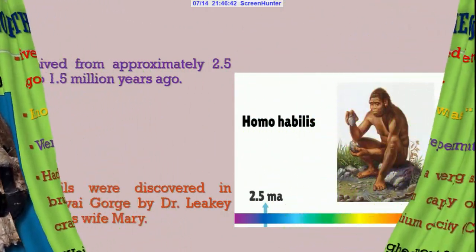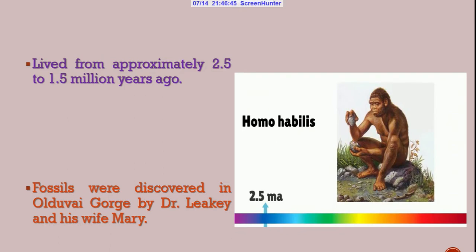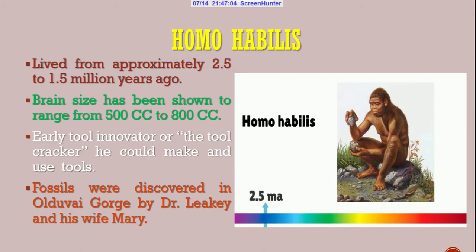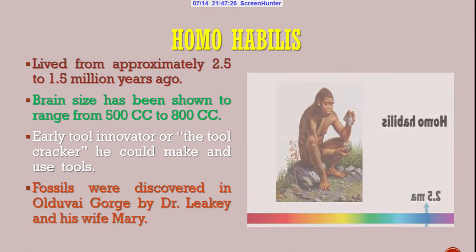The second stage of development is called Homo habilis. Homo habilis lived from approximately 2.5 to 1.5 million years ago. Homo habilis had a brain size of about 500 to 800 cranium capacity. It is said that Homo habilis was an early tool innovator or tool cracker who could use and make different stone tools. The fossils of Homo habilis were discovered by Dr. Leakey and his wife Mary in Olduvai Gorge.